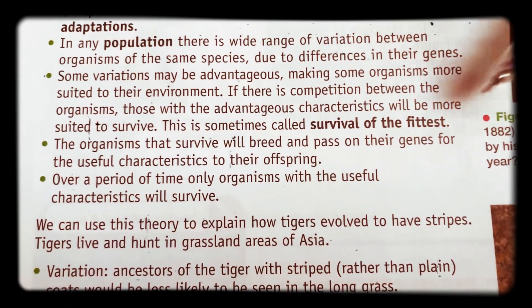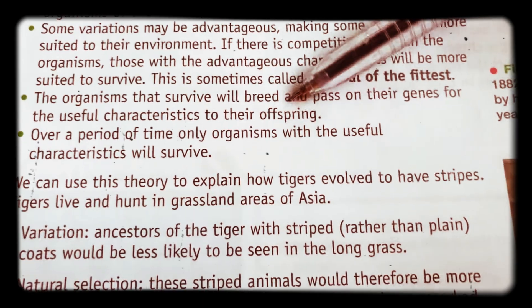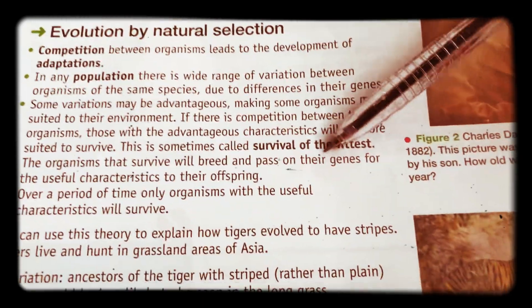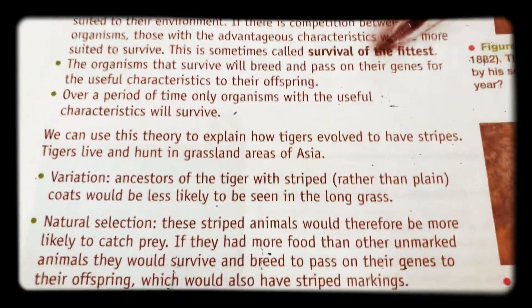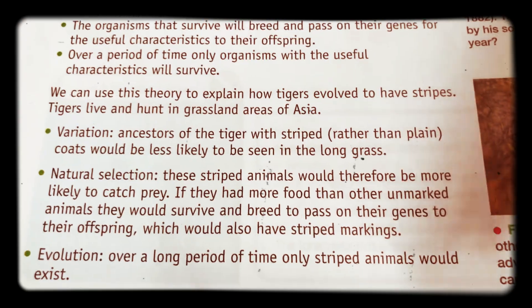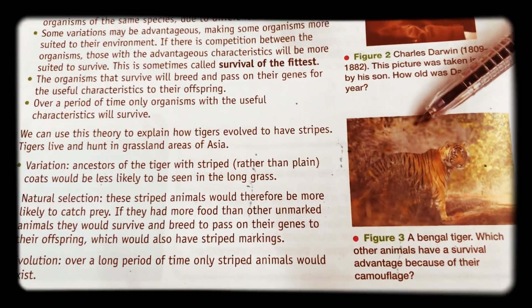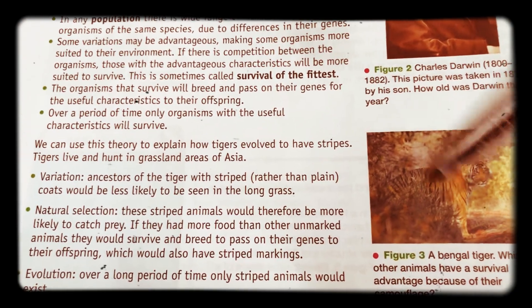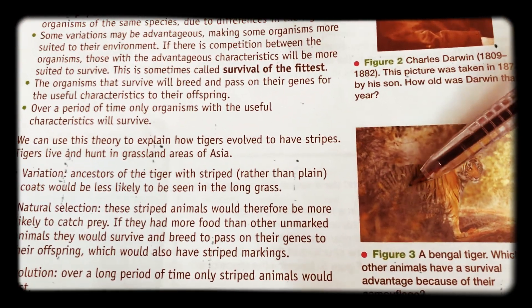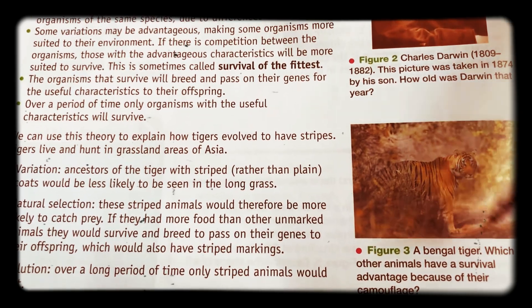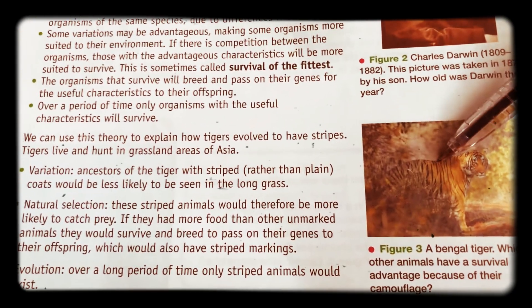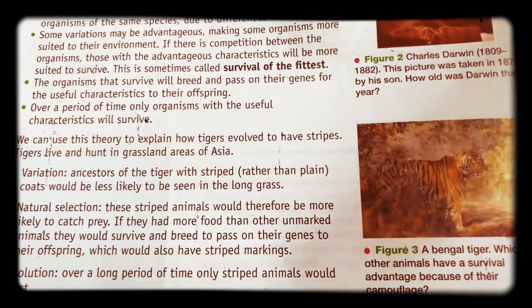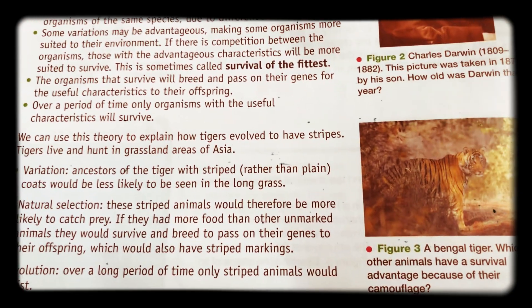That is sometimes coined 'survival of the fittest'. Those organisms that survive then breed, and his theory relied upon those genes being passed on from one generation to another — the useful characteristics to their offspring — and over time, only the organisms with these useful characteristics survive. Some scientists have used this to explain how tigers have survived in the wild and how they hunt — it looks as if they've got camouflage. Ancestors of the tiger with striped coats would be less likely to be seen in the long grass and could hunt more efficiently. Those striped animals would be more likely to catch prey, survive, breed, and pass on those stripes. Over time, those striped animals would then come to exist.